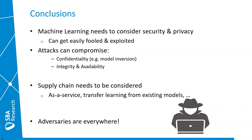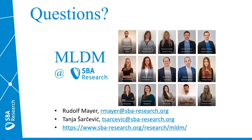To wrap up: the major takeaway is that machine learning really needs to consider security and privacy aspects, because machine learning models can get easily fooled and exploited. We've shown attacks that can compromise confidentiality, integrity, and availability of models. There are many potential attack points along the whole supply chain — whether using machine learning as a service or transfer learning from existing models — and adversaries will be there if the application becomes important enough. We are happy to answer questions, and we encourage you to visit our group's website for more topics in security and privacy in machine learning. Thank you very much for your attention.